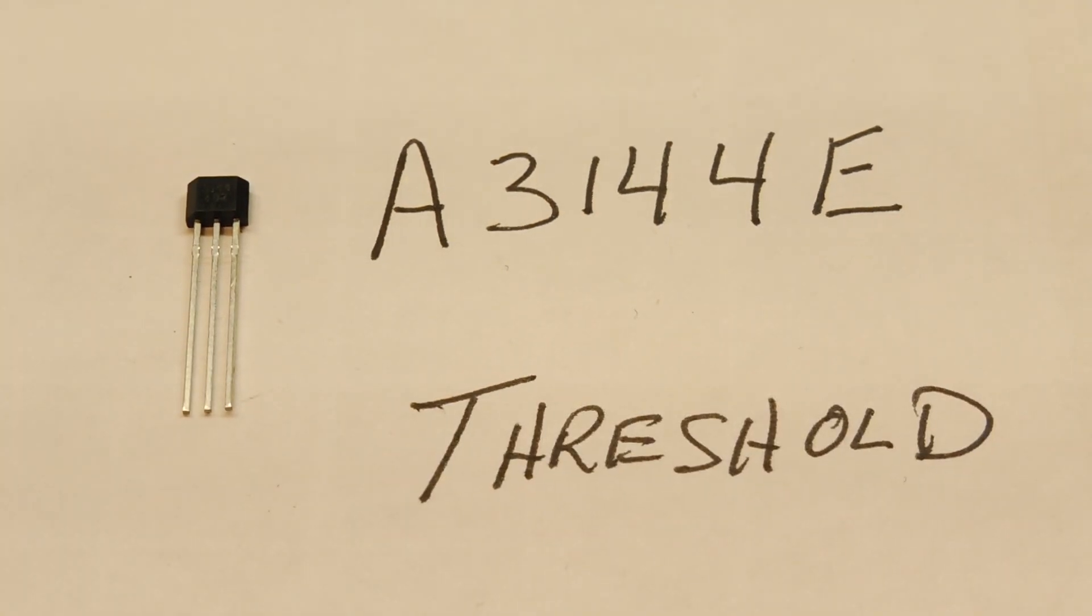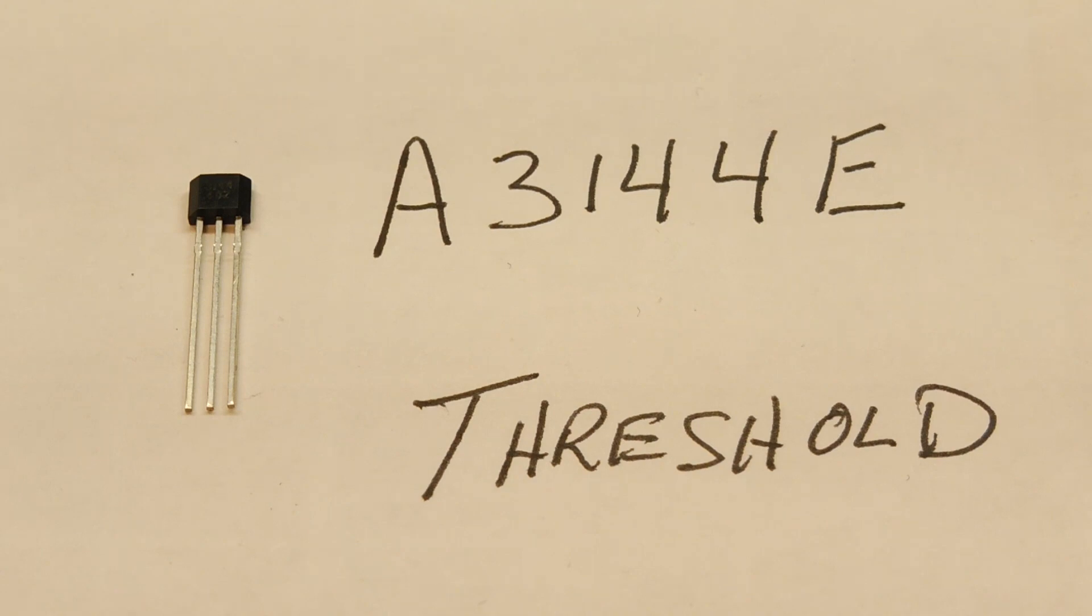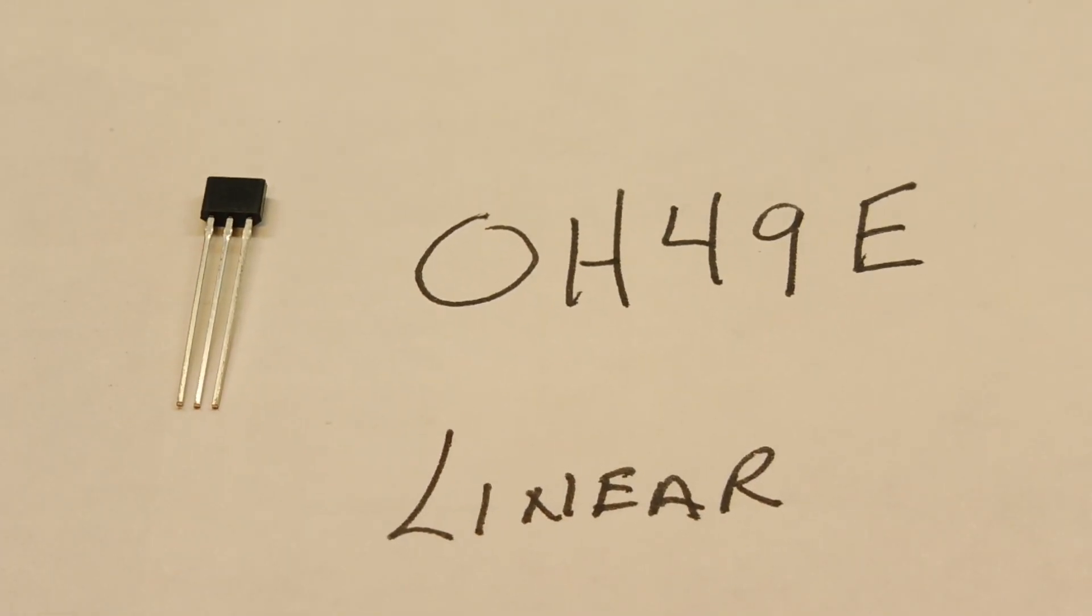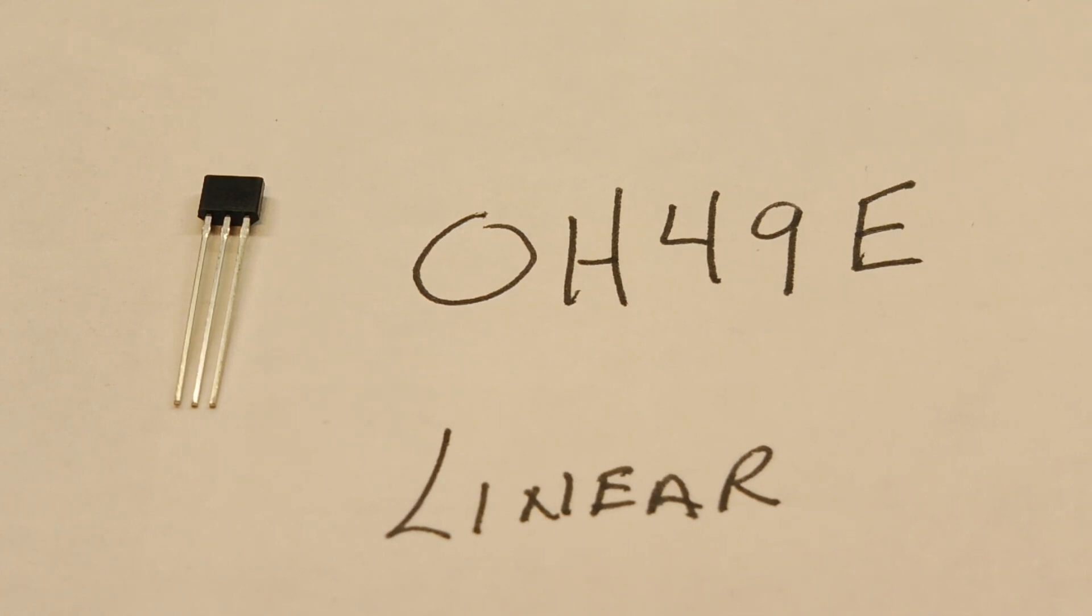Now there's another type of Hall effect switch, it's called a linear Hall effect switch, like this one here. It comes in the same package, this is the OH49E. And this will output a voltage in proportion to the magnetic field strength. So this will output a voltage 2 millivolts per Gauss.